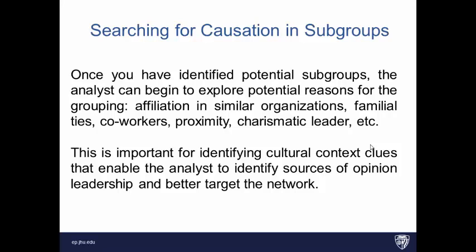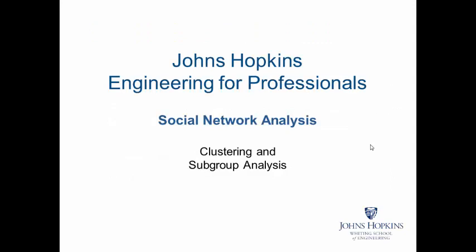Once you've done the work of identifying subgroups, and maybe even looking at a reduced graph from using the block model to block density to reduce graph, you can begin to look for potential reasons for grouping. So you can say, does a particular attribute predict membership in a group? Is there something qualitatively I can say about the members of the group? Is there some charismatic leader? Is there some sort of proximity? Are there co-workers that are getting together in some meaningful way? These are all things that might give you causation for subgroups. And that is important for identifying different cultural context clues that allow you to identify better sources of opinion leadership if you want to target the network for any kind of intervention or influence activity.